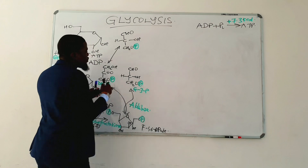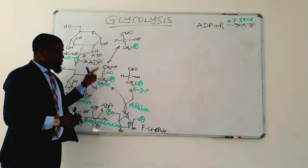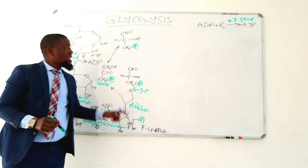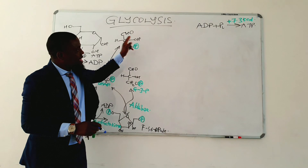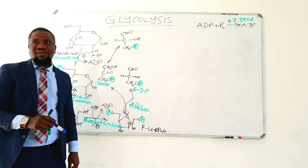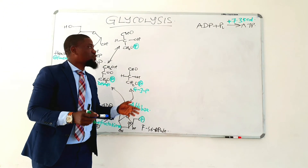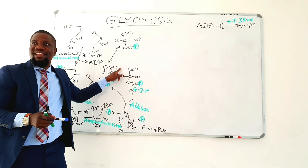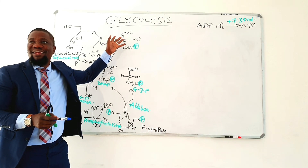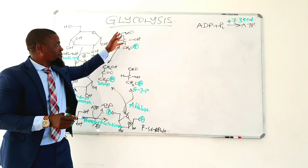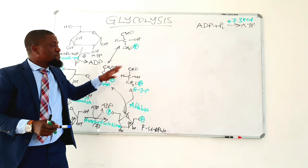So you have two glyceraldehyde-3-phosphate molecules being produced from one molecule of glucose, or one molecule of fructose-1,6-bisphosphate. Therefore, what is going to happen on this glyceraldehyde-3-phosphate and on that glyceraldehyde-3-phosphate is the same thing — just double. Whatever will happen to one is the same thing that will happen to the other, and both will continue the reactions.